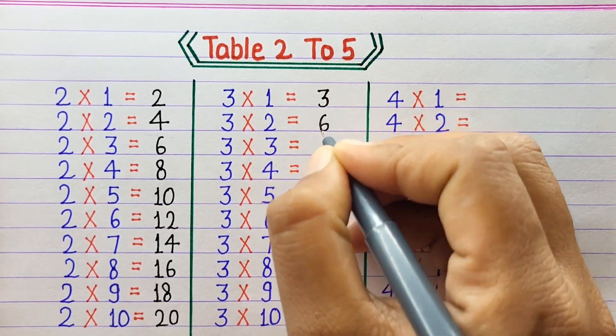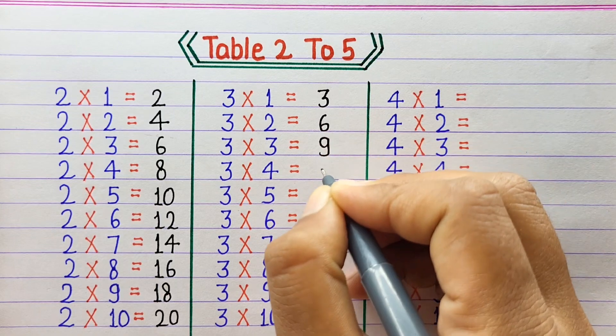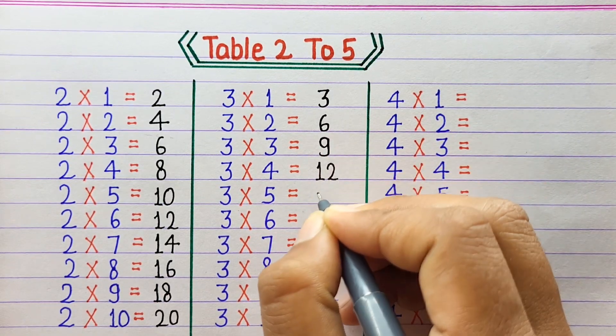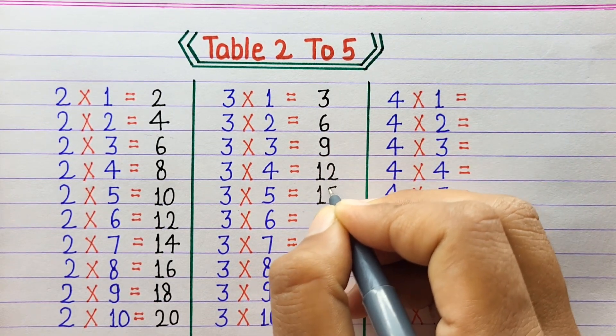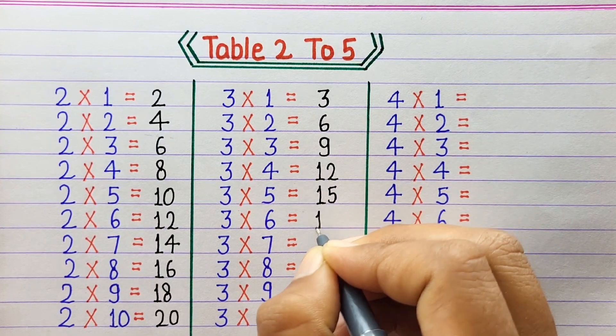3 times 2 is 6, 3 times 3 is 9, 3 times 4 is 12, 3 times 5 is 15, 3 times 6 is 18.